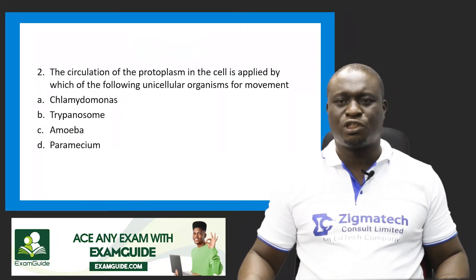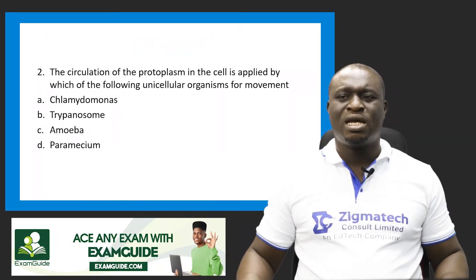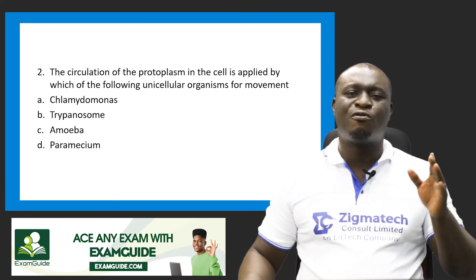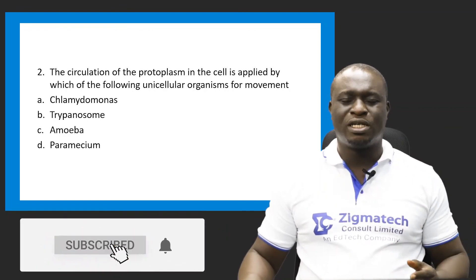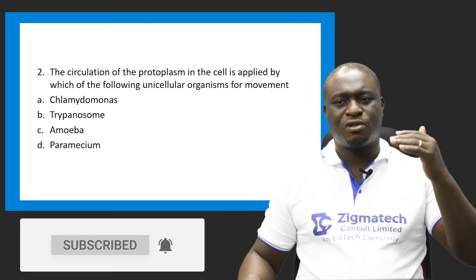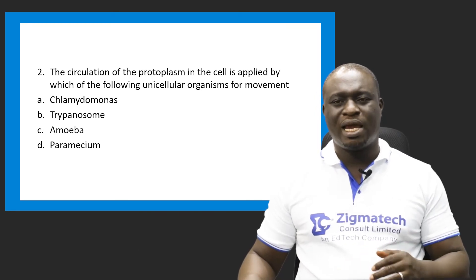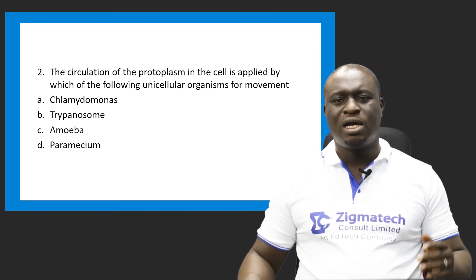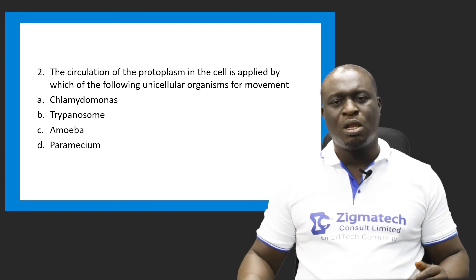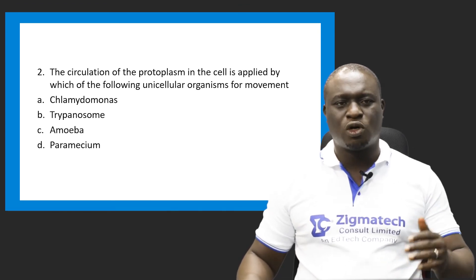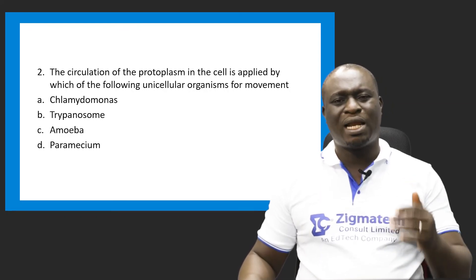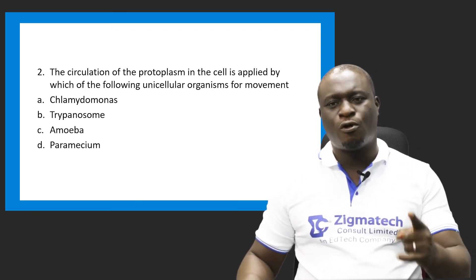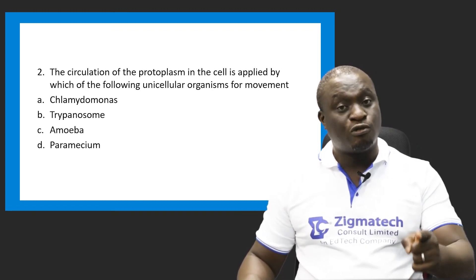Second question: the circulation of the protoplasm in the cell is applied by which of the following unicellular organisms for movement? Which organism applies the principle of cyclosis? Chlamydomonas is not correct; trypanosome is wrong; paramecium is also wrong. The correct answer is C — the amoeba. The amoeba applies the principle of continuous circulation of the protoplasm in the cell for movement and also for feeding.